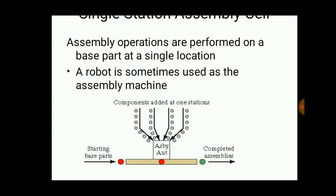The starting base parts are inserted from the beginning, and the parts to be added are placed on the hopper of the automated assembly machine. The assembly operations are completed, and finally the completed assemblies are taken out from the end.